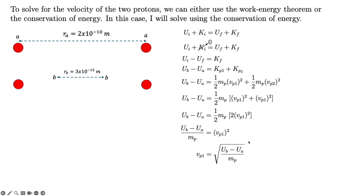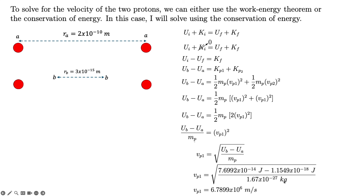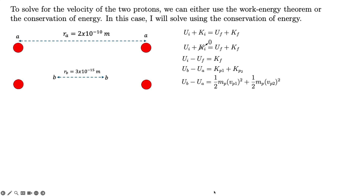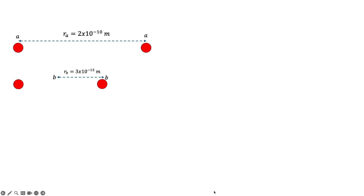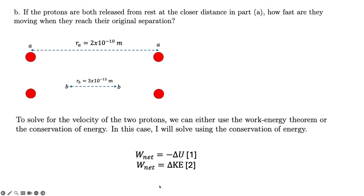Substituting the known values of U_B, U_A, and the proton mass, we get v_p1 = 7.7899×10⁶ meters per second, which is also the velocity of proton two since they move at the same speed. This completes the solution. Note that you can also solve part B using the work-energy theorem with the two sets of equations discussed earlier.